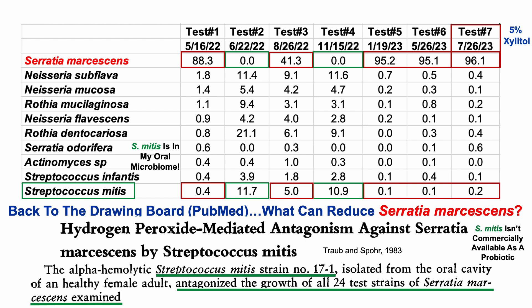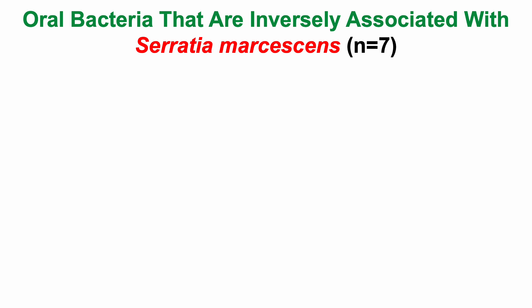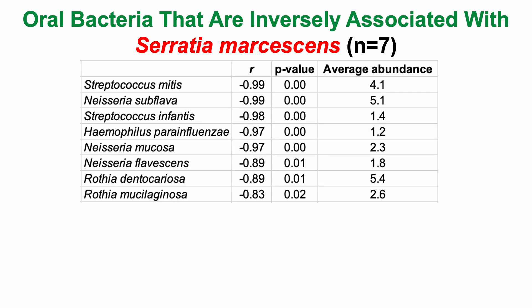That got me thinking — maybe I don't need just one bacterium, maybe I can use a team effort. Could increasing other oral bacteria help limit Serratia? I looked at oral bacteria inversely associated with Serratia across those seven tests. Focusing on the most abundant ones, there were eight bacteria significantly inversely correlated with Serratia at p < 0.05 — each with a negative correlation coefficient, the strongest at R = -0.99. Together these eight species represent about 24% of all bacteria.